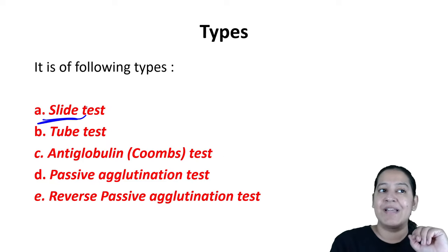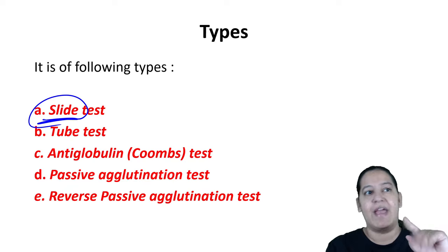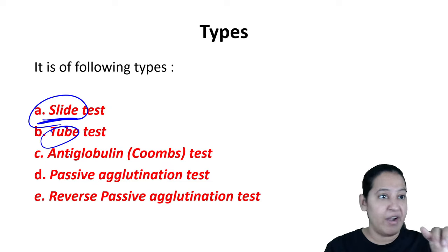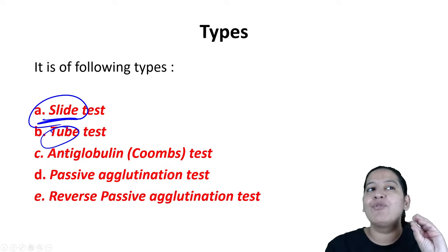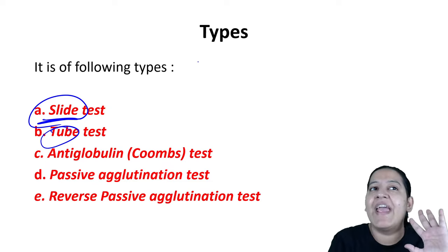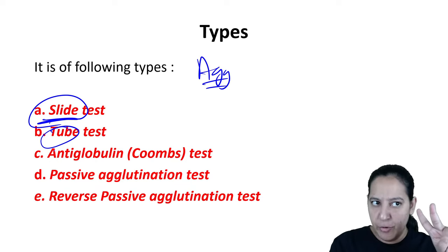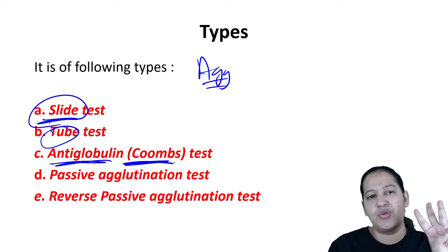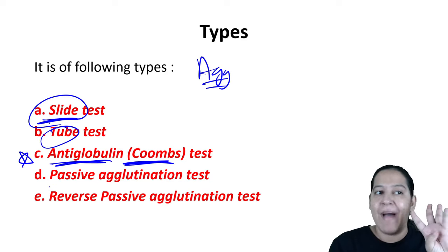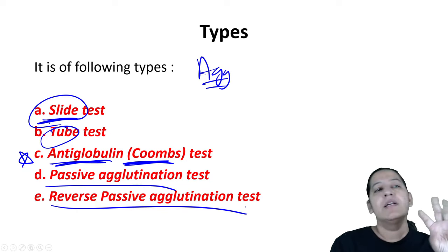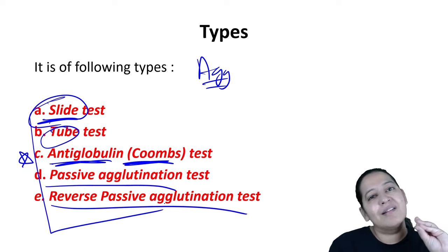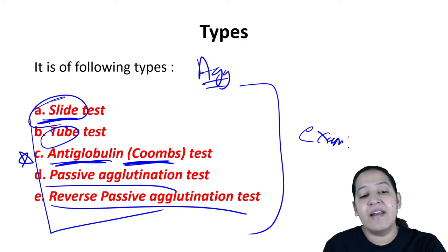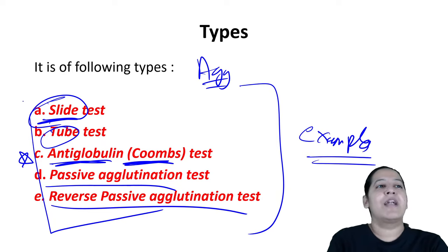The five types of agglutination are: slide test, tube test, Coombs test (antiglobulin test), passive agglutination, and reverse passive agglutination. Slide and tube tests are common to both precipitation and agglutination but their examples differ. The most important among these for MCQs is the Coombs test. Learn all five types along with their examples.